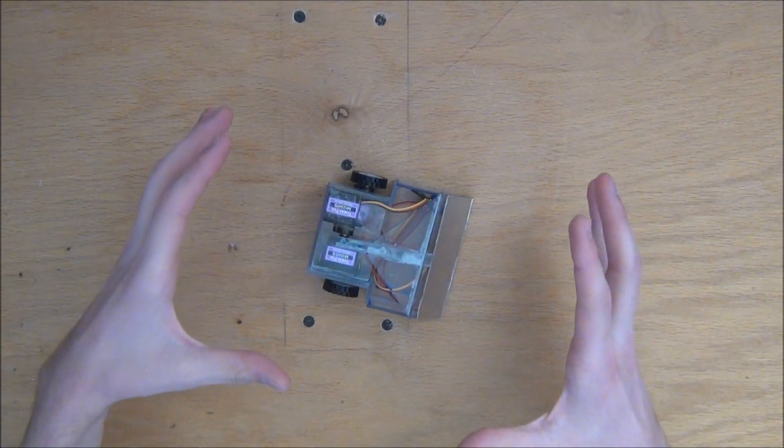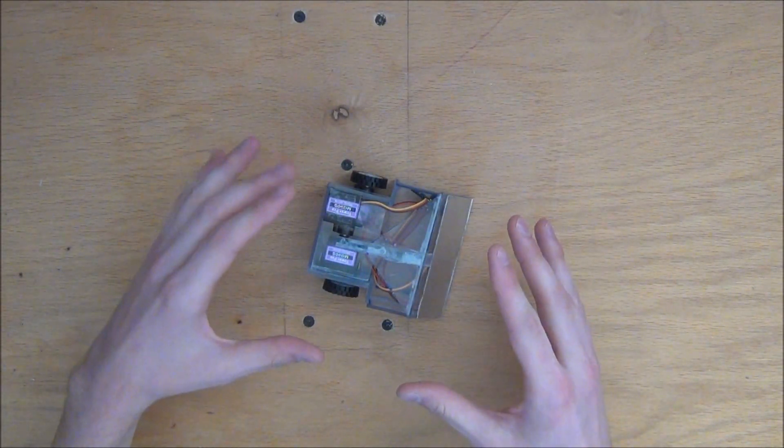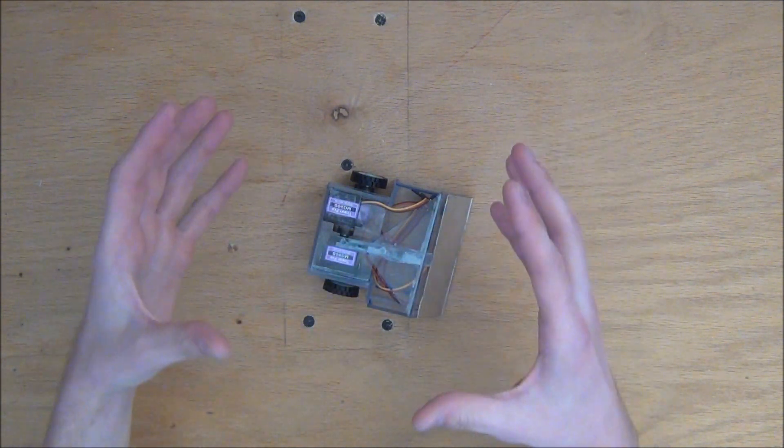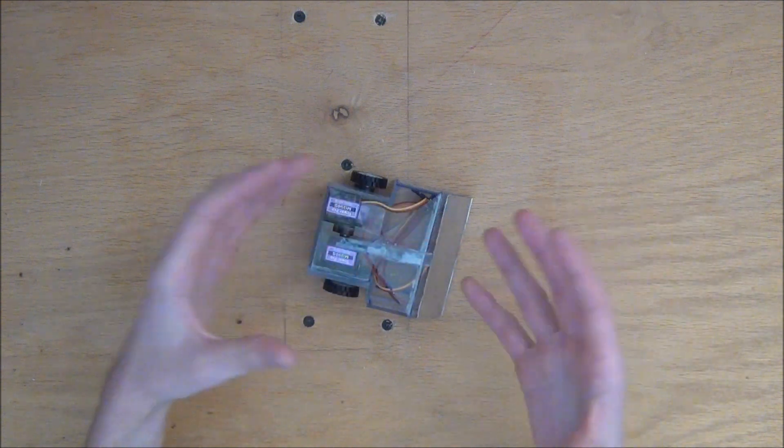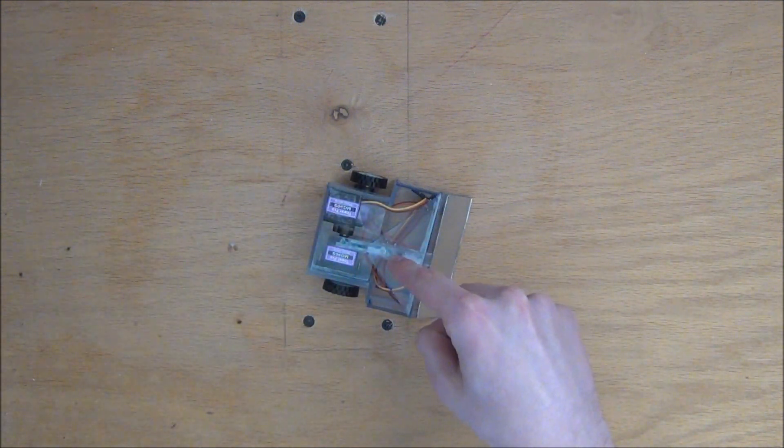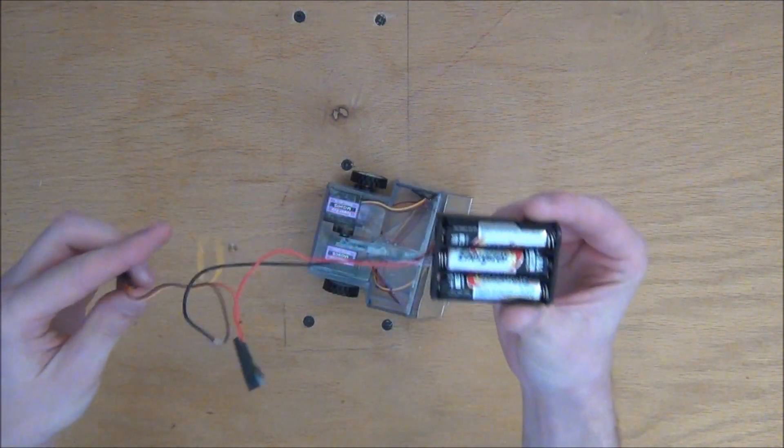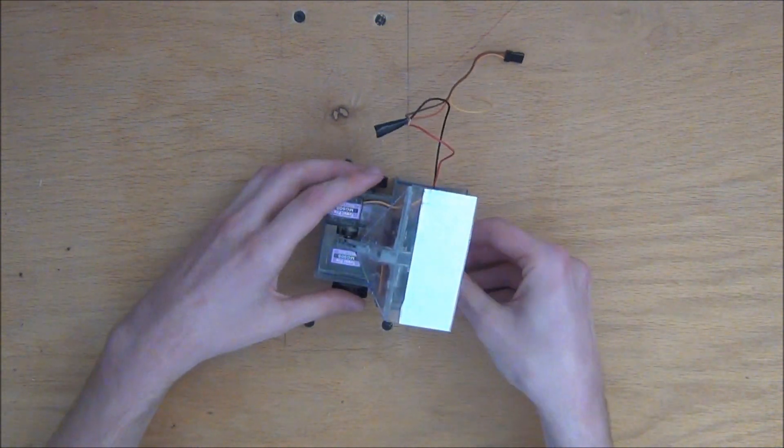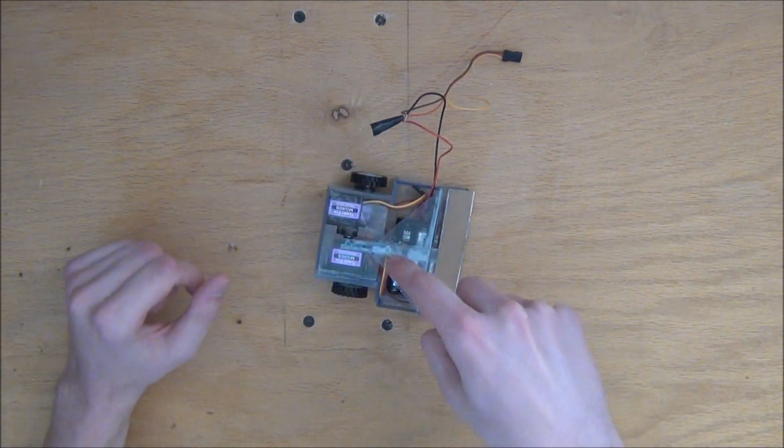I know a lot of people when they build these they'll go out and buy battery packs to put inside the robot. But whenever I do that my battery packs always die and I have to wait for them to recharge. So this robot I've designed to run off just three AAA batteries, which fits very tightly and snugly right underneath the flipper.